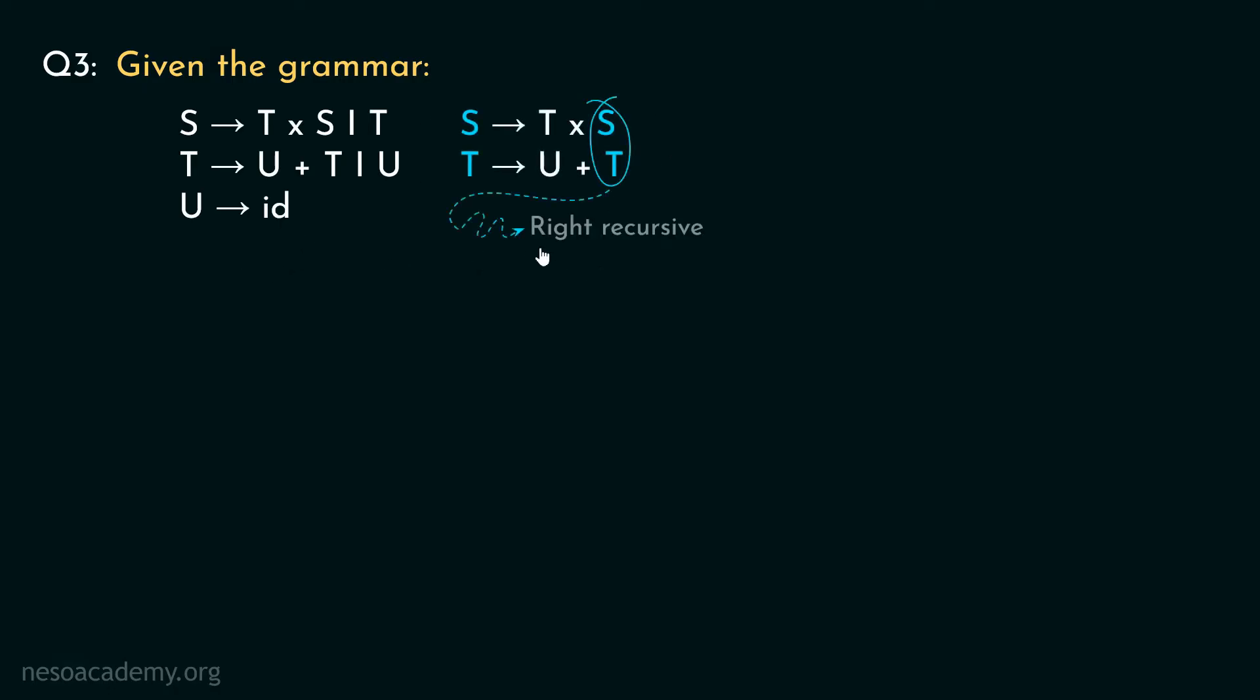Both of them are right recursive. So clearly the operators are right associative. Also due to this same reason we cannot expand the syntax tree or the parse tree derivation in both the directions. They will only grow towards the right. So obviously this grammar is not ambiguous.